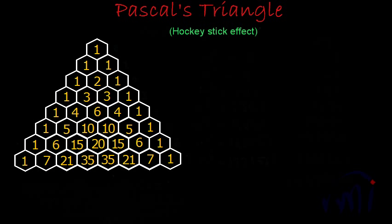Let's take one more hockey stick: 1 plus 4 is 5, plus 10 is 15, plus 20 is 35, and 35 is over here.